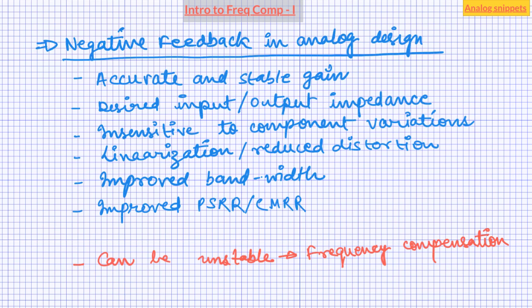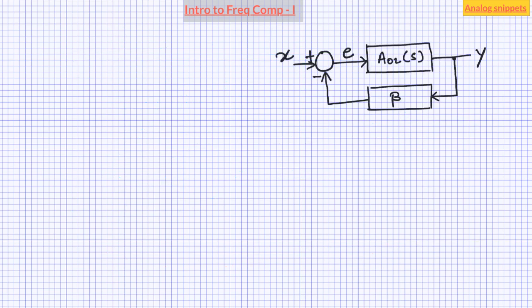This video will try to explain the basic concepts and terminology related to frequency compensation or loop stability. We will also try to develop an intuitive feel of the subject using graphical tools. In order to explain the properties of negative feedback systems, it is often represented in the form of a block diagram like this.